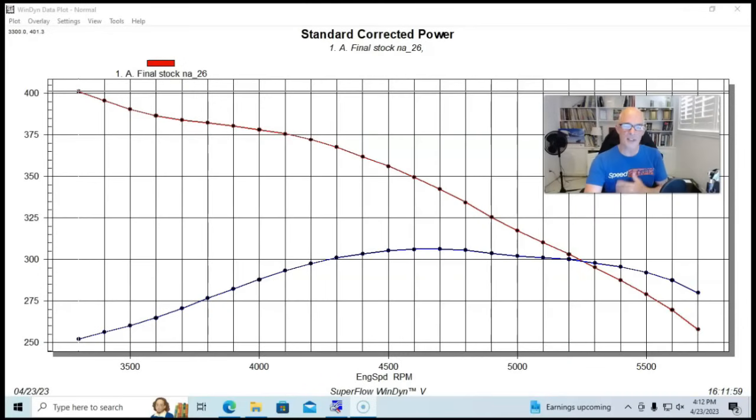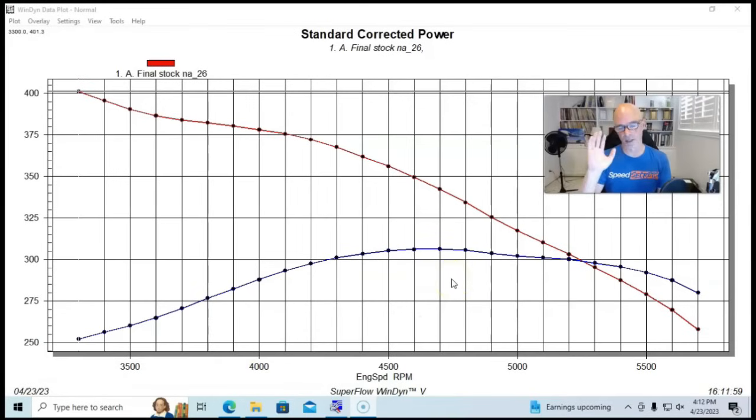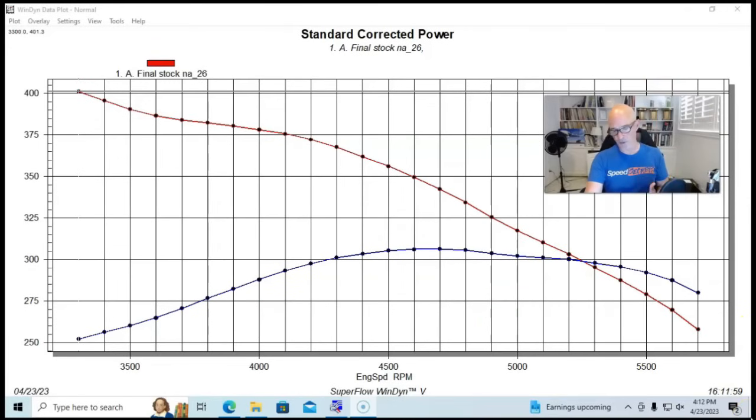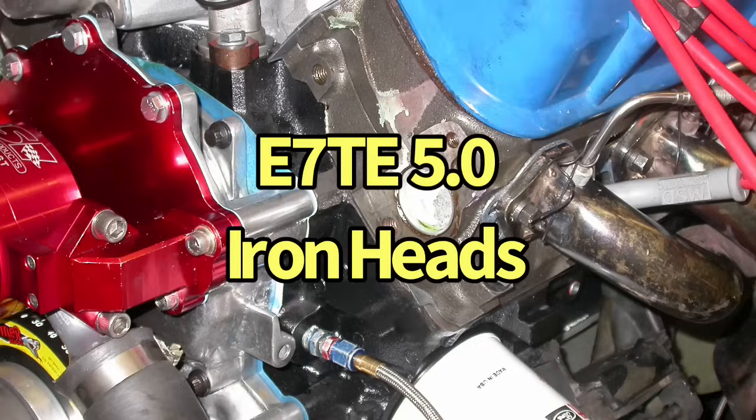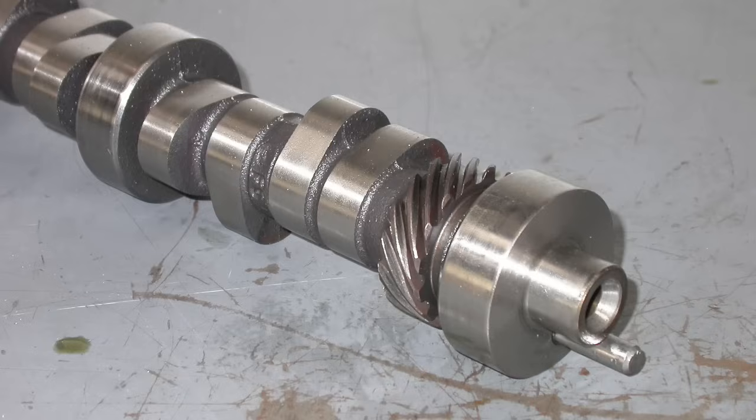Let's jump right in. We've got this 347 stroker—it had a Coast High Performance 347 stroker kit with a 3.4 inch stroke and a 4030 bore. We had forged flat top pistons, and to that we added a set of stock E7TE heads that did have a valve spring upgrade because later on we would be doing a camshaft on this thing.